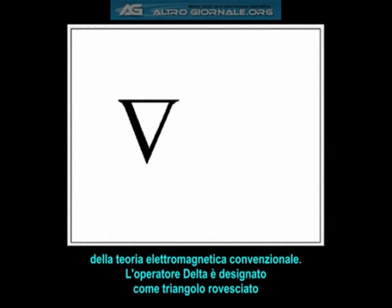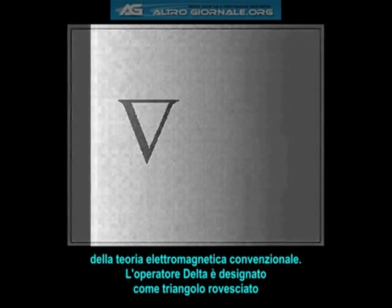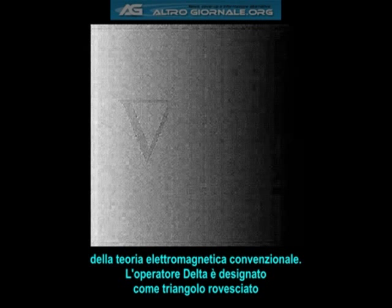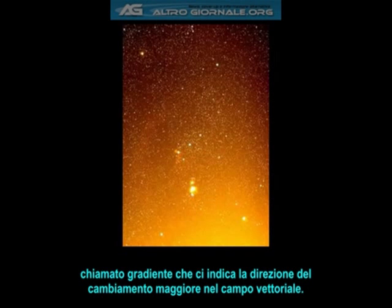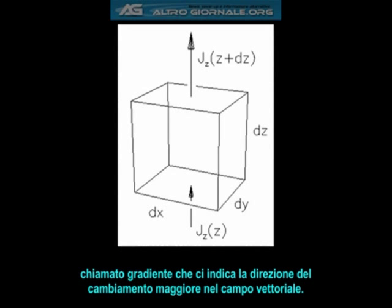The delta operator, which is designated as an upside-down triangle, is called a gradient, which basically tells us the direction of greatest change in the vector field. The divergence tells us the amount by which it changes when we move in this direction.